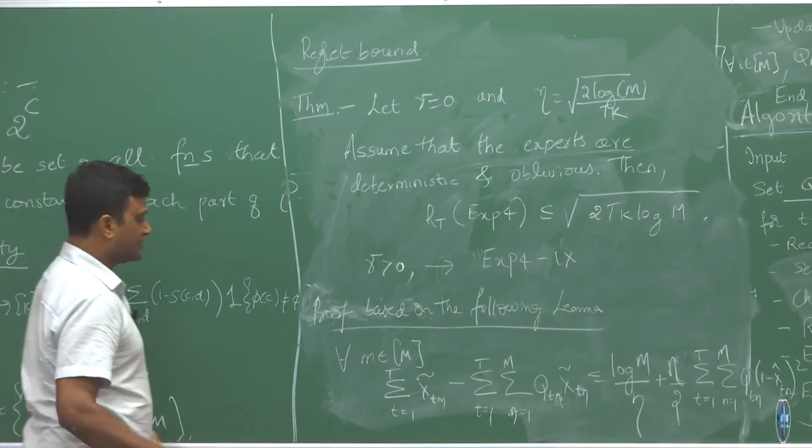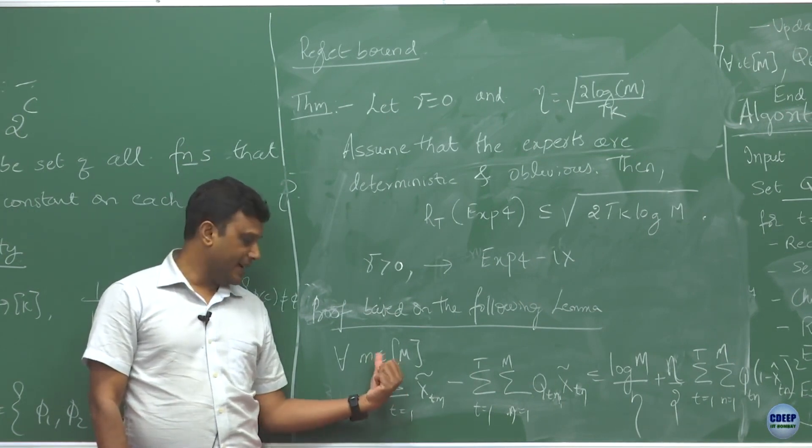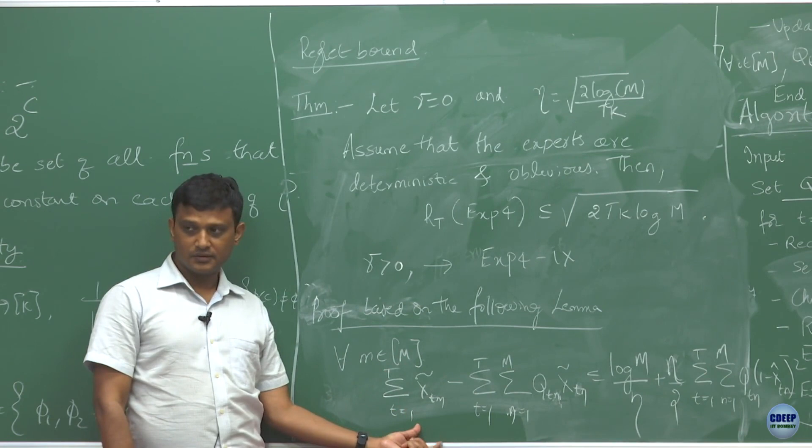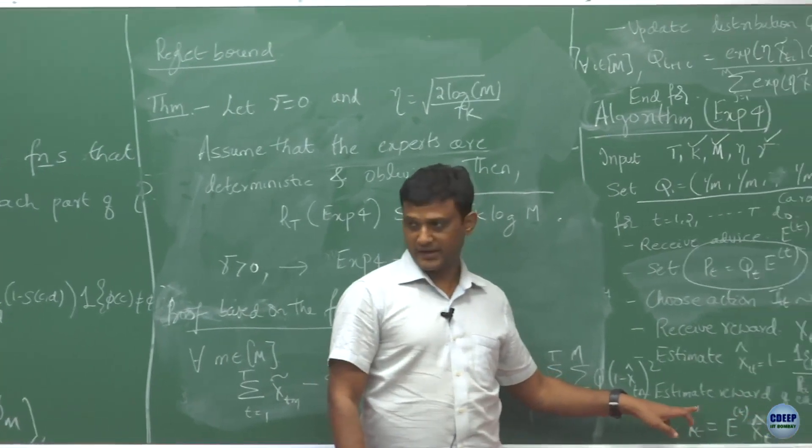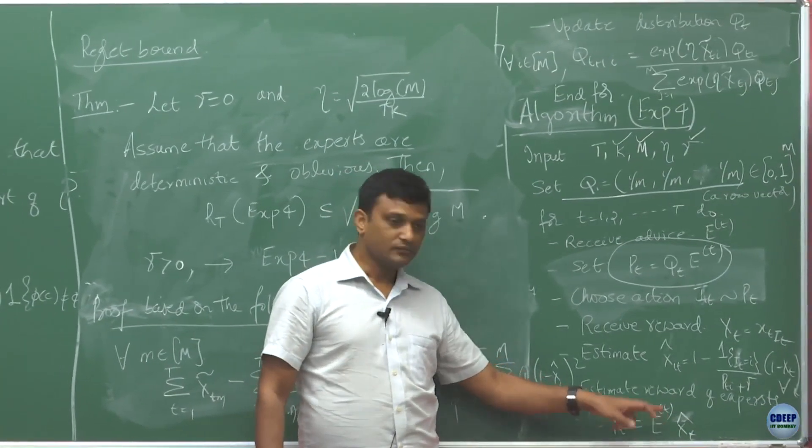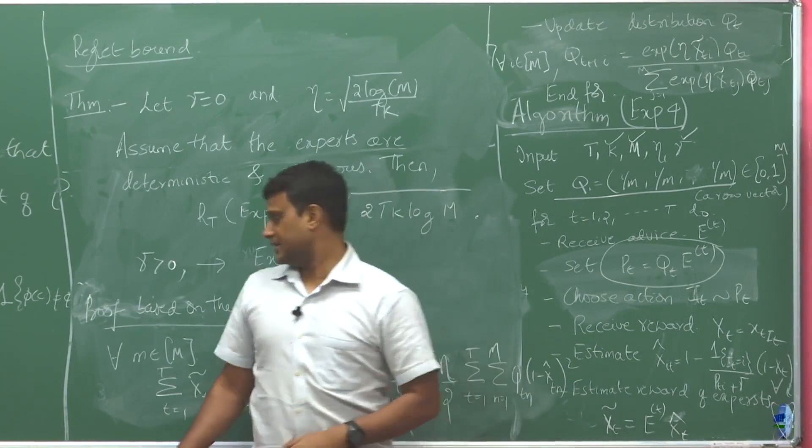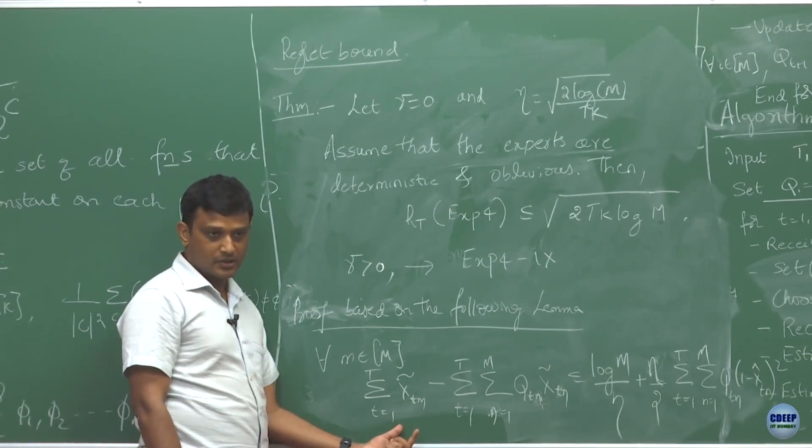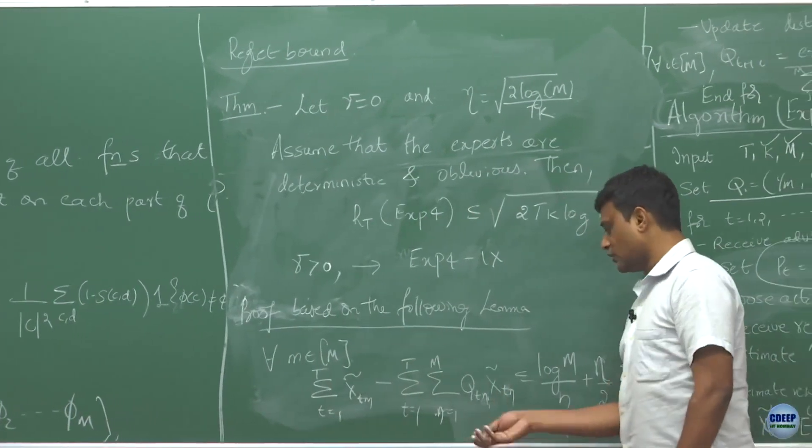What this lemma says is, so what is this term giving you here? If you take an expert M, what is this term giving you? If you look into this X tilde, it basically gives the expected estimated rewards for that expert M. So in that way we can treat it as the total reward that has been obtained by expert M. And then we are comparing it against what is this quantity over here.